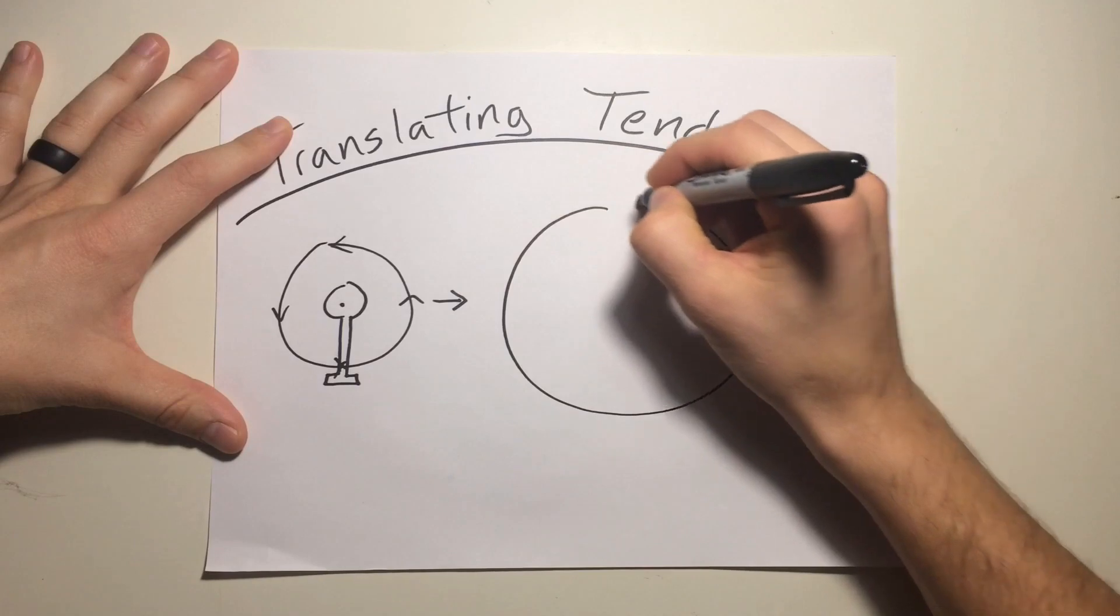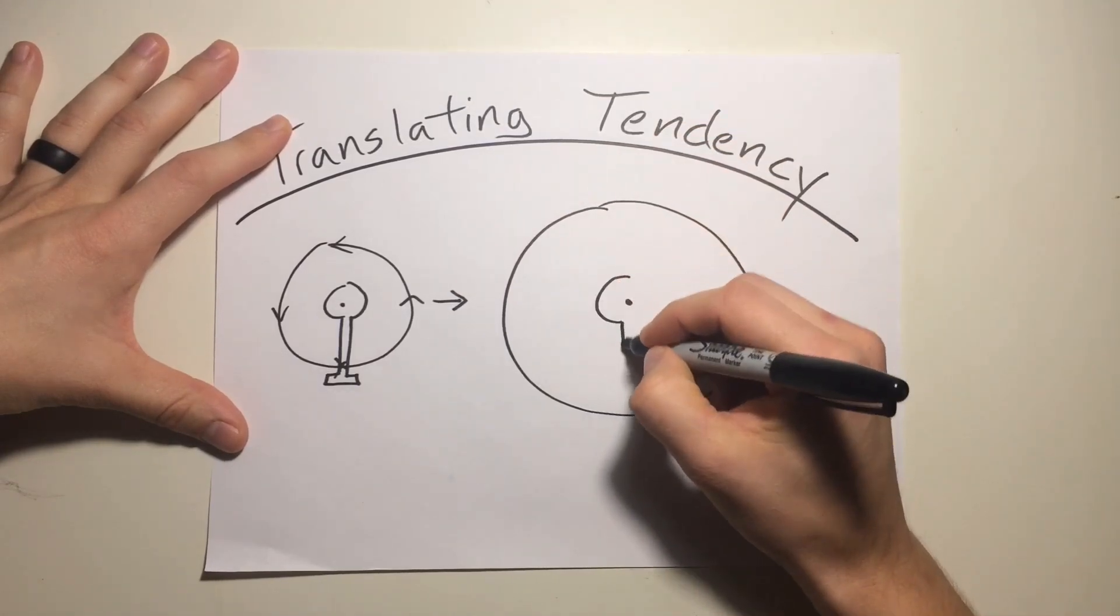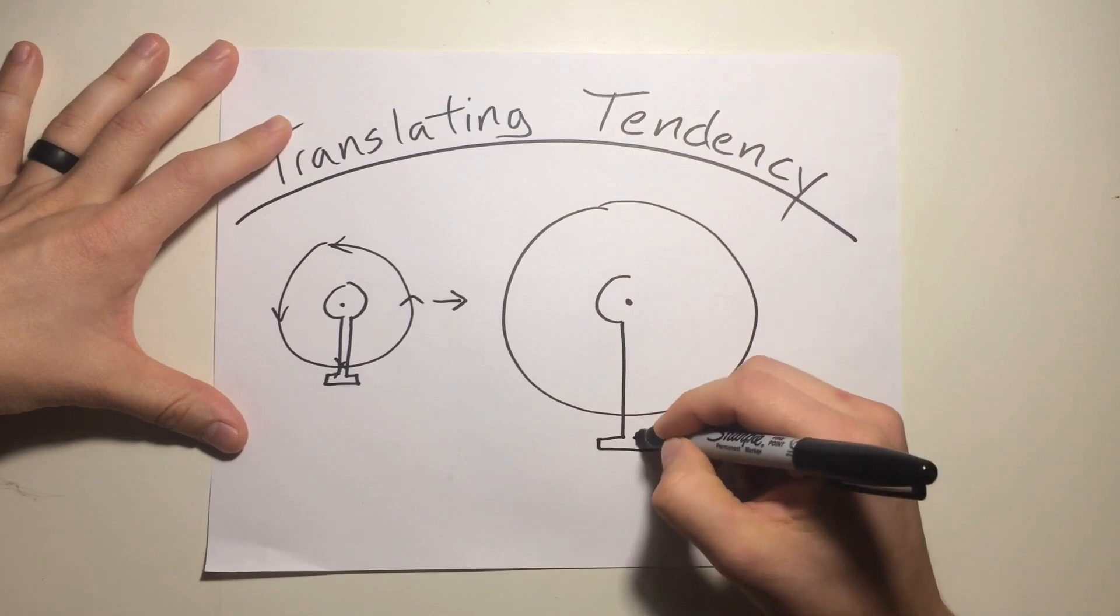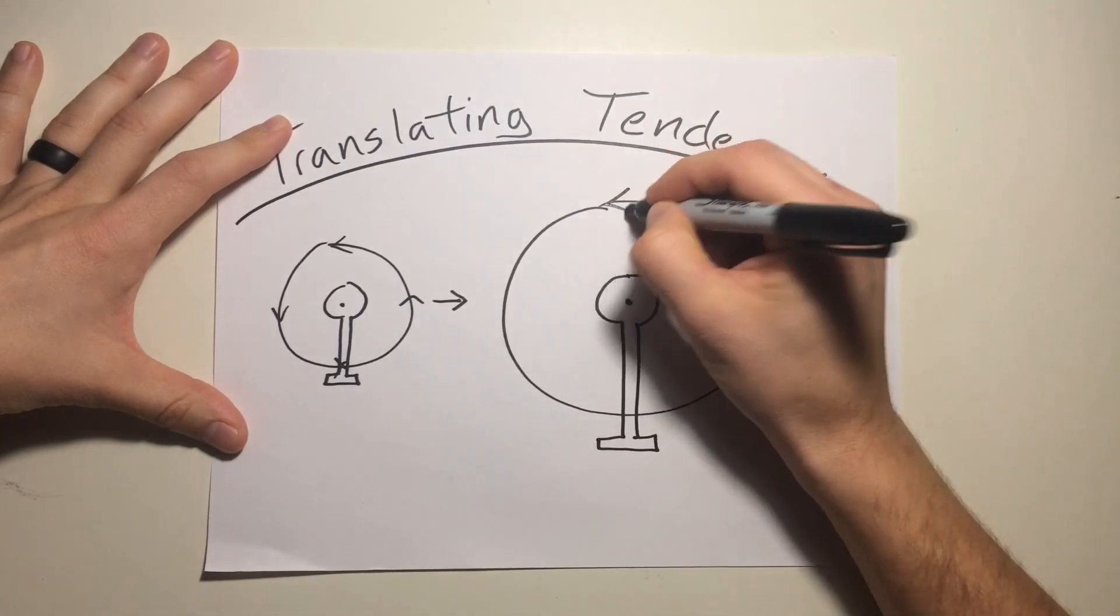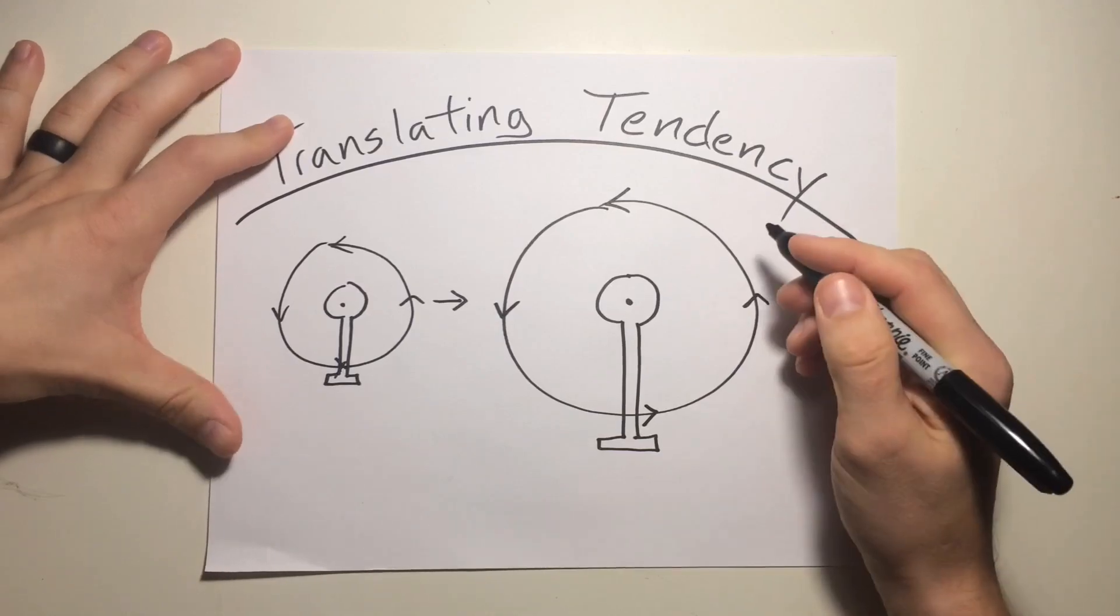Well, let's blow it up to a slightly bigger drawing. Here's our mast. We'll draw the fuselage around it. Our rotor system turning counter-clockwise.